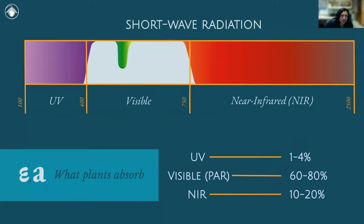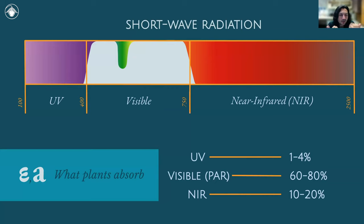Of all the radiation a plant receives, most UV is not absorbed, and most near-infrared is also shunted away. Plants make use mostly of the visible spectrum — about 60 to 80% of what is received. Notice there's a dip in the green area: that gray area is what we're making use of, and the green is what we're not. When you look at a leaf and it appears green, it is reflecting green light — that's what we see, which is the light not being used by the plant tissue.